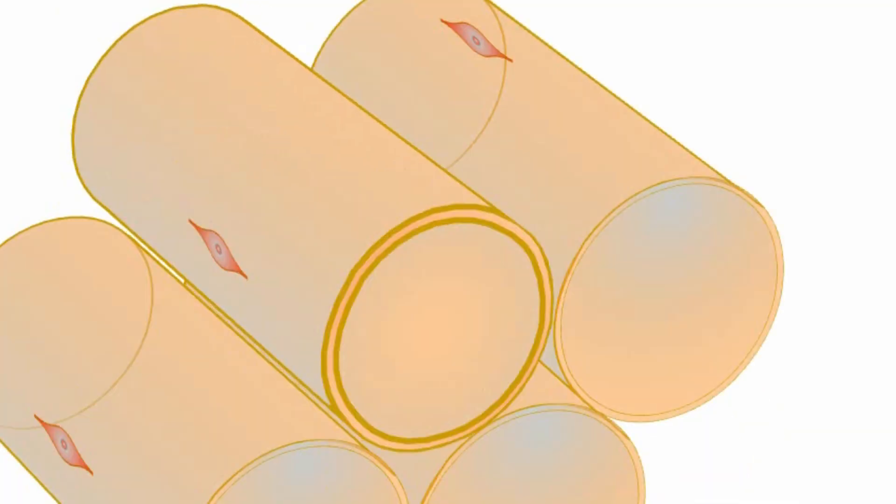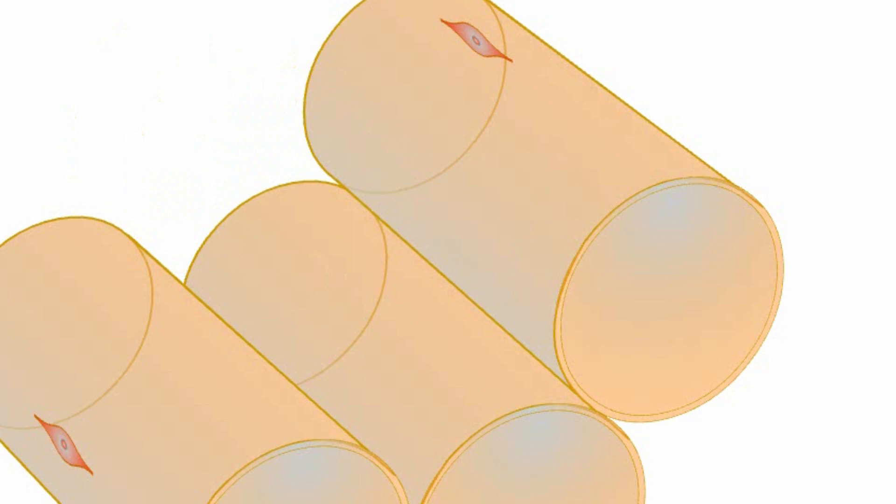The localized contraction breaks the fibers inside the cell. When damage to the cell is severe, the cell dies.